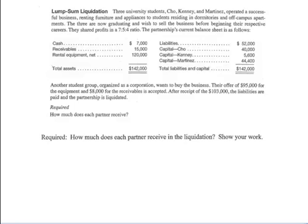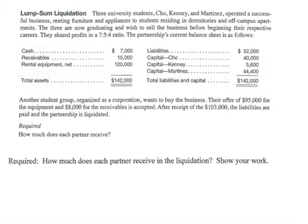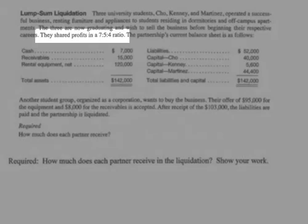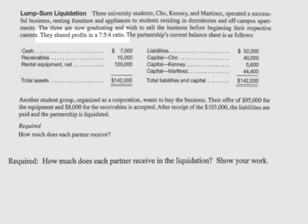Three university students — Cho, Kenny, and Martinez — were in a partnership. They've been successful. Basically their business was to rent furniture and appliances to students. Those three are graduating now and moving to other cities, so they're going to sell the business. Here's how they've been sharing profits: seven to five to four. So that does not add up to ten, so you can't read that as 70%, 50%, 40%. But don't be thrown off by that.